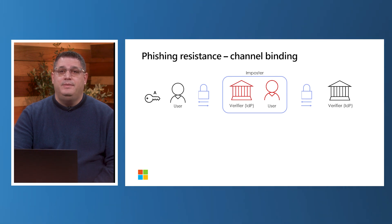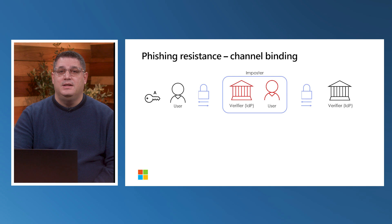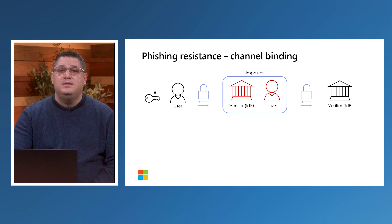An example of a phishing-resistant authentication protocol that uses channel binding is client-authenticated TLS, also known as mutual TLS, because the client signs the authenticator output with an earlier message from the protocol that is unique to the TLS connection being negotiated. Let's go over the flow.